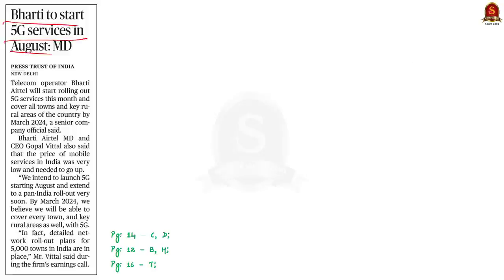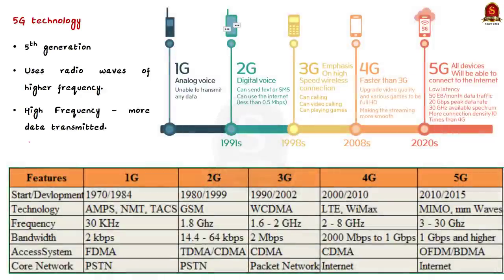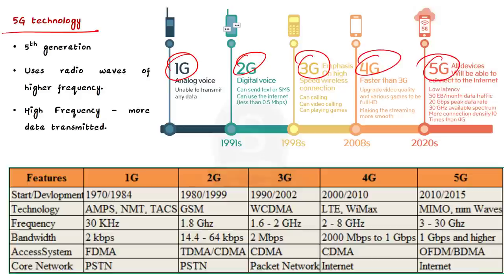This news article talks about 5G services. Telecom operator Bharti Airtel will start rolling out 5G services this month to cover all towns and key rural areas of the country. As part of this discussion, let us see some important points about 5G technology from Prelims perspective. 5G, as the name suggests, is a fifth generation mobile technology. Cellular communications networks are known by numeric generations: 1G, 2G, 3G, 4G, and 5G, where G stands for generation.